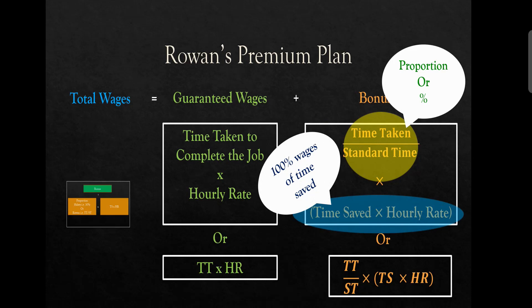It depends on how much a worker has performed. The proportion is calculated on the basis of time taken divided by standard time. Let's take a short example. If the standard time is 10 hours and the worker takes 8 hours, the proportion is 8 divided by 10, which is 0.80 or 80%. So we can give a bonus up to 80% of the maximum possible bonus.